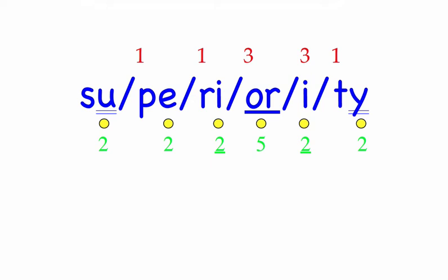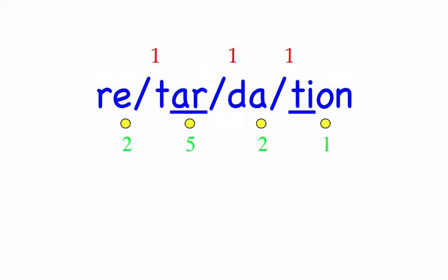Row eight. Retardation. Retardation is a mental disability. Four syllables. First syllable: Ri, two sounds. Tar, two sounds, T-R. Day, two sounds, D-A. Sean, three sounds, Sh-Ah-N. Ri-tar-day-sean. Mark the word. Retardation.